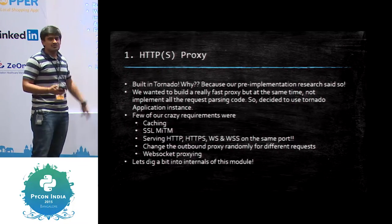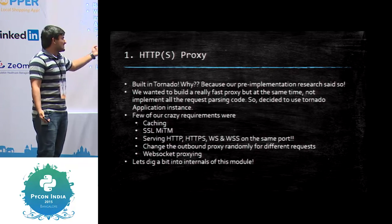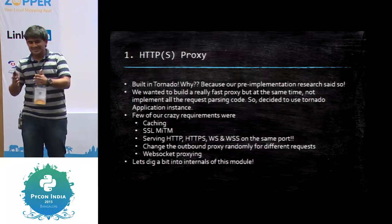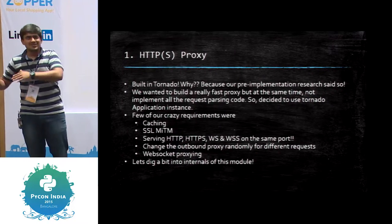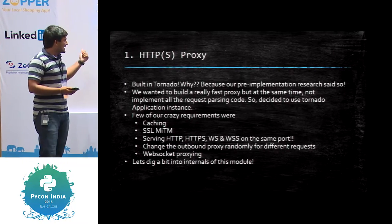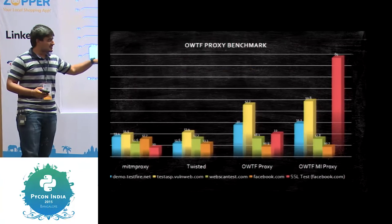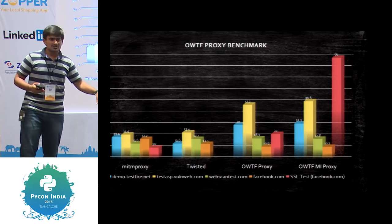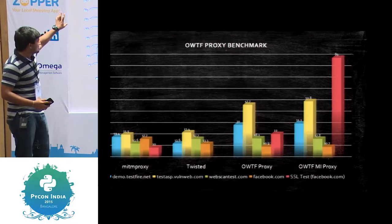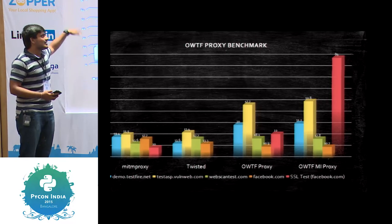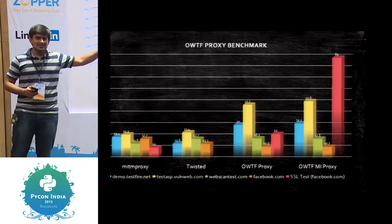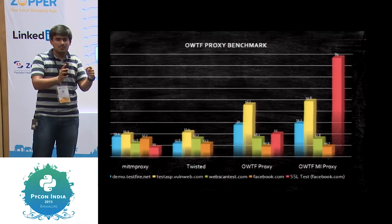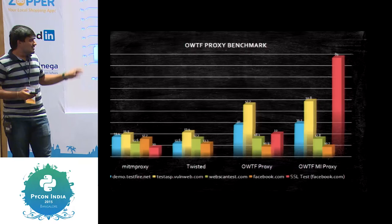Some of our requirements: the proxy should have caching, the ability to man-in-the-middle SSL connections — which was a big challenge — and serving WebSockets and HTTP, HTTPS, WebSocket, and WebSocket Secure on the same port. This was a benchmark we did after building the proxy — all Python proxies. MI stands for multi-instance proxy. You can see how well the multi-instance proxy scored. The reason is we did quite a lot of research before building the proxy. For caching, the multi-instance proxy has four separate instances and uses the file system as a cache because everything else is slow.